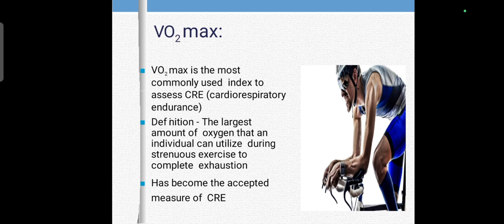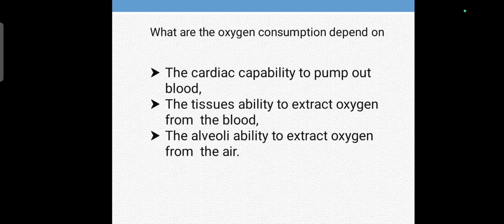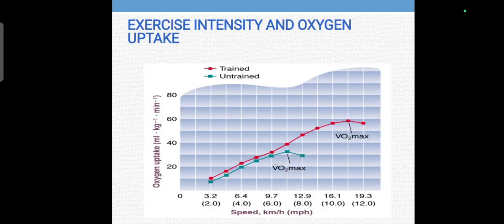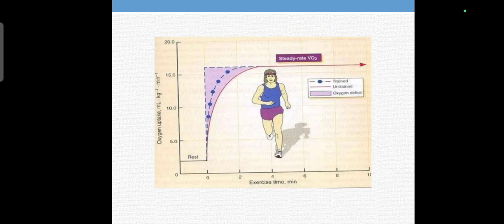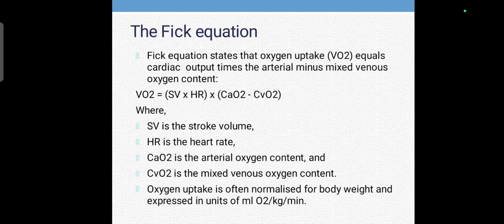It is the most common indicator to assess cardiorespiratory fitness. So it depends on cardiac output and arteriovenous difference. As exercise intensity increases, your oxygen uptake increases. We have seen that VO2 max can tell us how efficiently your cardiovascular system is working.